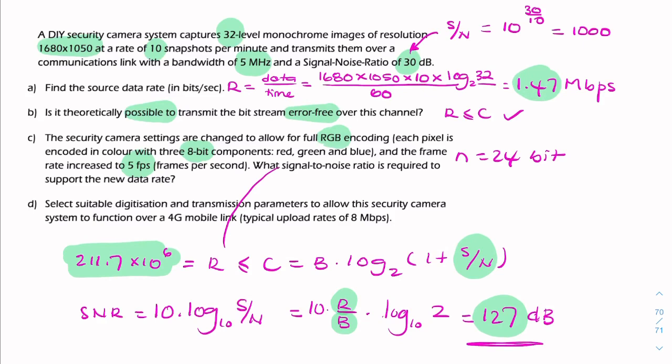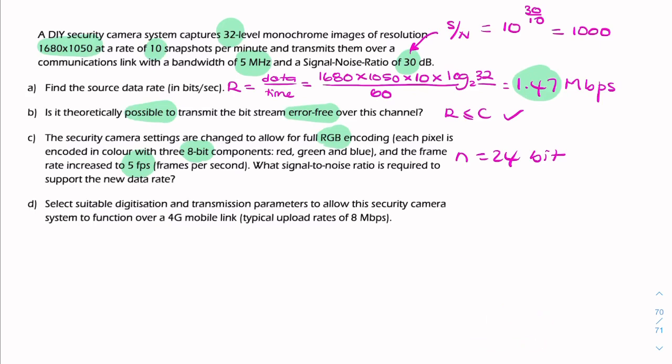So finally for the last question part D, it's asking us to design or to select suitable digitization and transmission parameters to allow this to work over a 4G link. So we only have 8 megabits per second, so we don't have the 211 megabits per second that we were just talking about, we only have 8. So what could we do? Let's say the resolution we can't change, the things we can change are the bit depth N and we can change the frame rate, the number of frames per second.